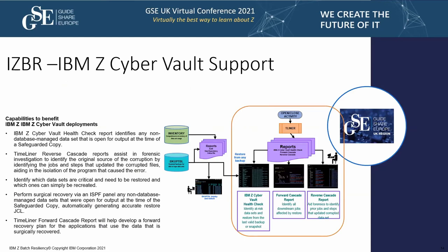The IBM Z CyberVault solution: for a complete catastrophic recovery, IZBR offers the CyberVault Health Check Report, focusing on non-database-managed data. Systems like DB2 and IMS will take care of themselves; we're looking out for the hidden heroes — VSAM datasets and sequential files that are open for output. Using a combination of that along with the Timeline reverse and forward cascade reports, we can start forensic investigation into where corruption occurred. The reverse cascade is used to find the source, and you can do this within the CyberVault — which would be completely disconnected from the production environment — to determine where the malfeasance occurred.